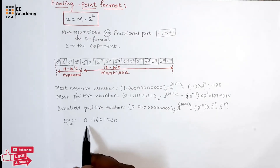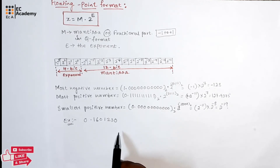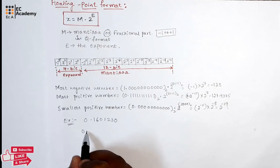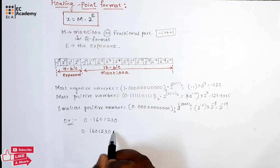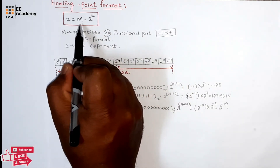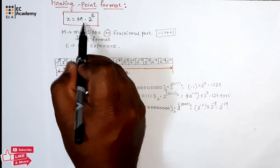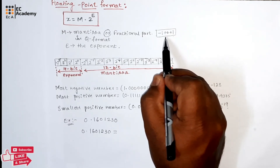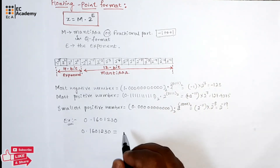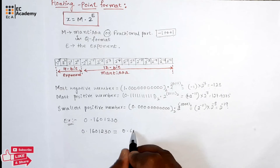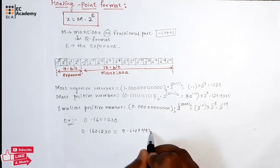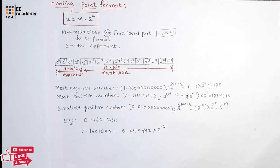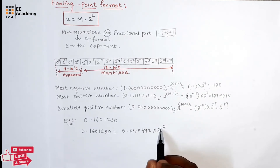Now let us take an example where a decimal number should be converted into floating point format. We will take the number 0.160123 and write it in the format m × 2^e. Here m should have a range between minus 1 to plus 1. So we can write this number as 0.640492 × 2^(−2), where m is between minus 1 and plus 1, satisfying this condition.